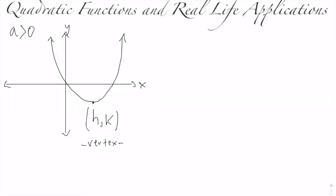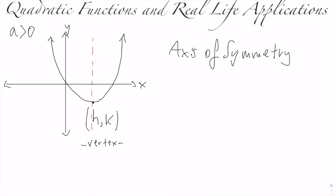Quadratic function graphs also have an element called the axis of symmetry. The axis of symmetry is the line that passes straight through the parabola, also through the vertex. Because the axis of symmetry passes right through the vertex, we can take the x-value of our vertex, which is h, and set it equal to x in order to find the equation that gives us the axis of symmetry.